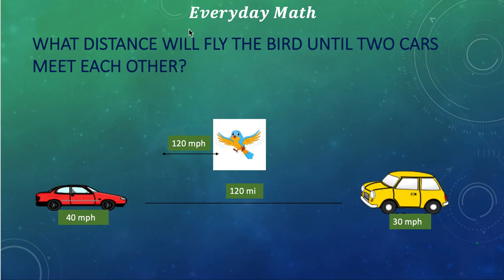First of all, let us find the velocity, the total velocity of two cars. The total velocity of the two cars is equal to V, which is equal to V1 that stands for the red car velocity, and V2 that signifies the velocity of the yellow car.